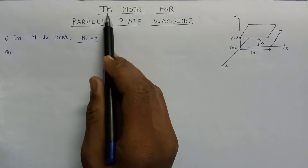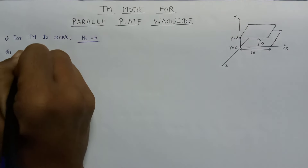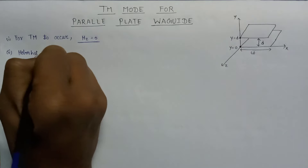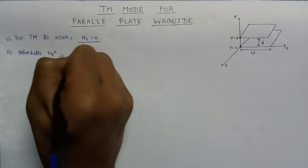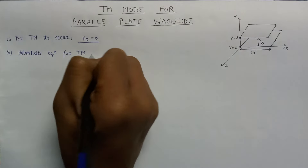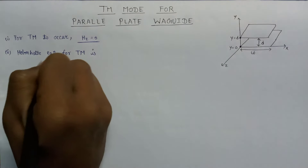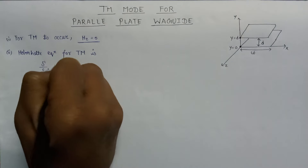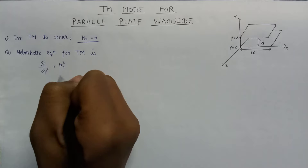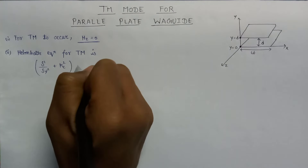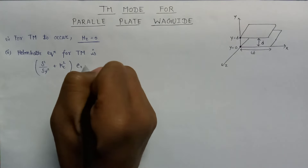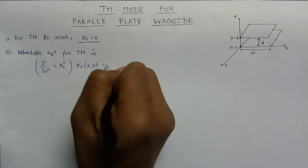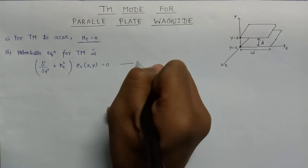Having a look at the Helmholtz equation for this TM mode. The Helmholtz equation for TM mode is given as: del squared over del y squared plus kc squared, multiplied by the transverse electric field ez of x,y, equals zero. This is equation number one.